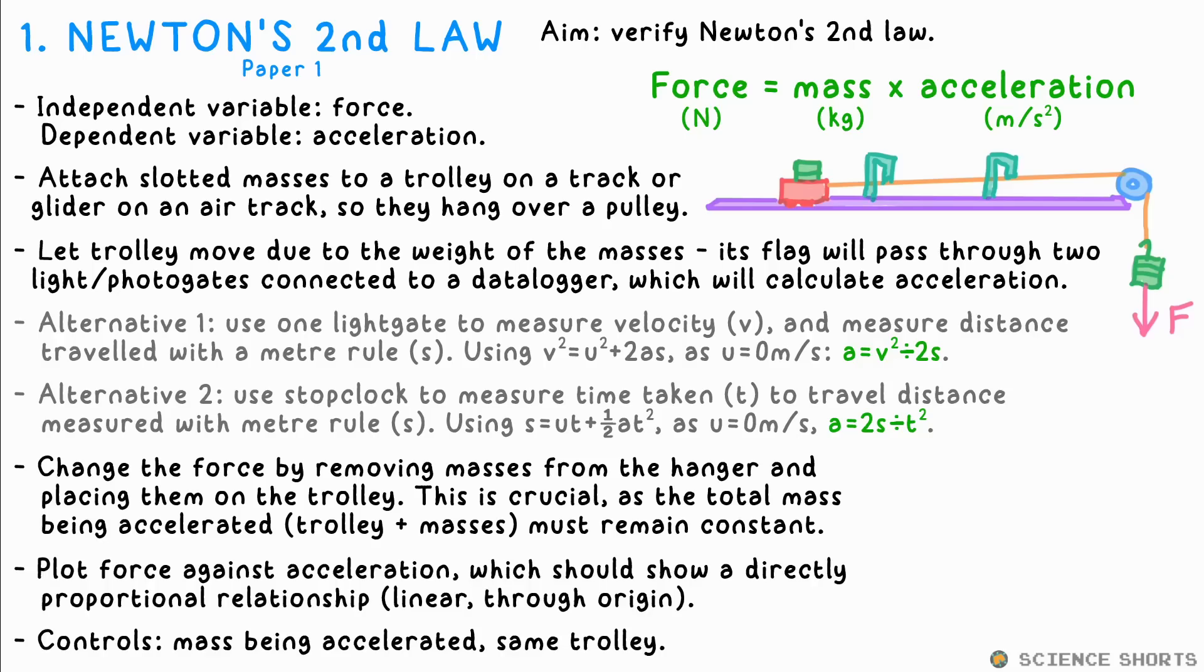Why? Well, that's because the force of gravity is not only accelerating the trolley, but also the masses themselves. So we must keep the total mass constant. Get the force by multiplying the mass by g every time, plot the force against acceleration, and you should once more end up with a proportional relationship, a straight line going through the origin. As F equals MA, the gradient of this line should be equal to the mass of the trolley and masses.